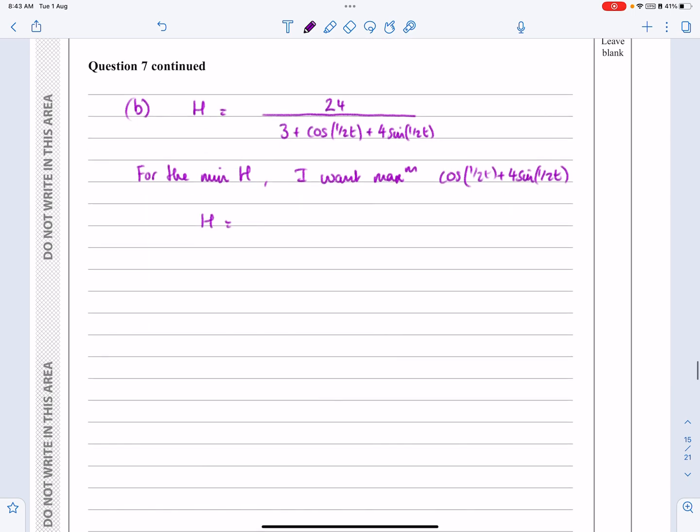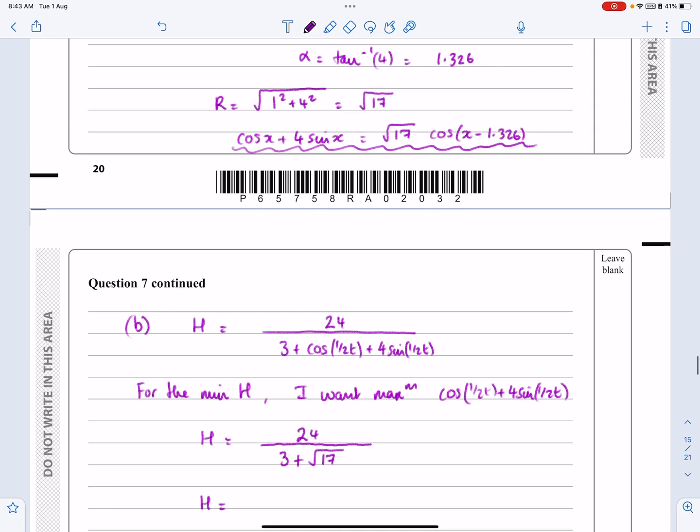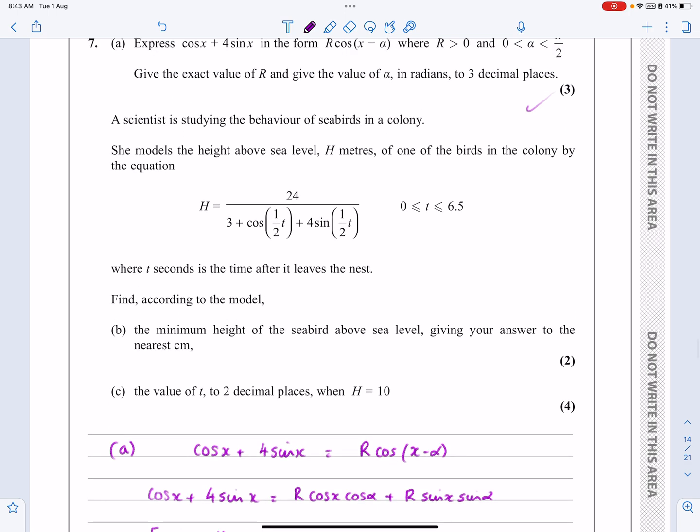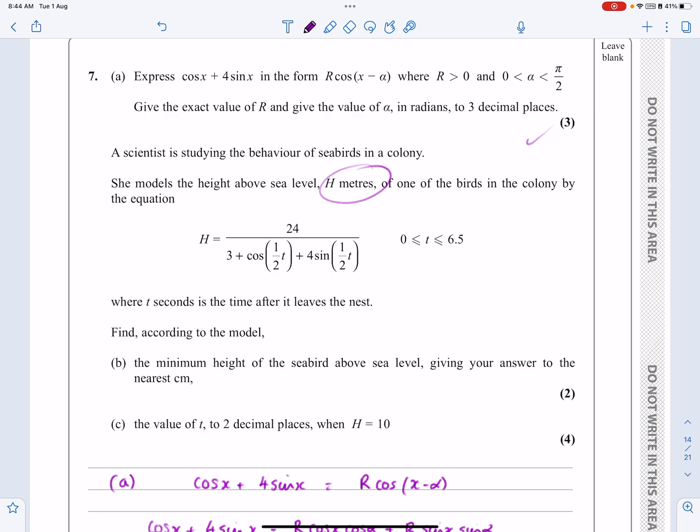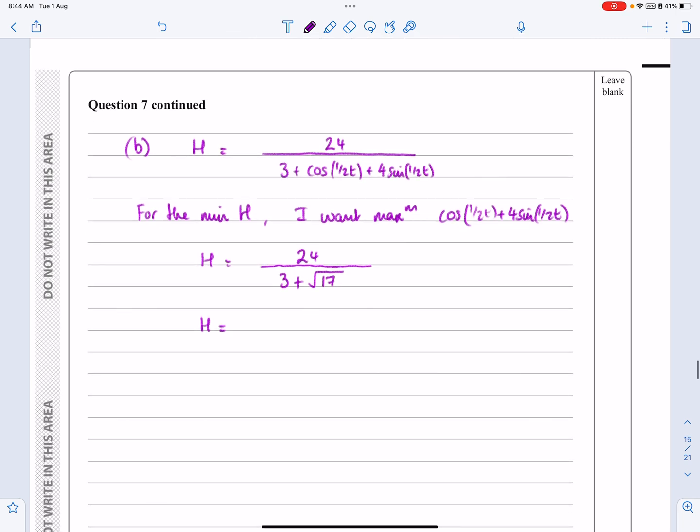So, in this case, I'm going to get H equals 24 over 3 plus, and I don't need to do any work necessarily explaining this, root 17. So, H works out to be equal to. Let's just go back and have a little bit more of a look at the model here. The minimum height, giving your answer to the nearest centimetre. Okay. Yeah, and H is measured in metres. Okay, so if I want it to the nearest centimetre when H is measured in metres, if I do that calculation, that comes to 3.37 to two decimal places. And the second decimal place there is centimetres, isn't it, if this is a measurement in metres. So, if I do it to two decimal places, that's the same as doing it to the nearest centimetre in this case. Right, okay, that wasn't too bad. That was all right.